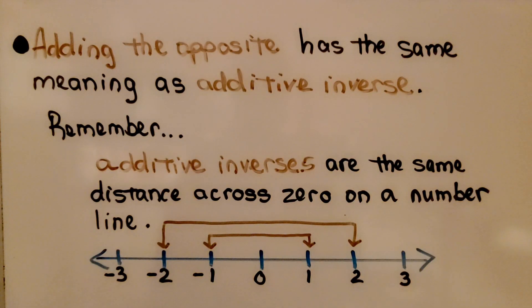Adding the opposite has the same meaning as additive inverse. Remember, additive inverses are the same distance across zero on a number line.